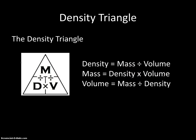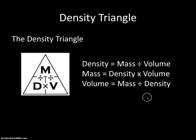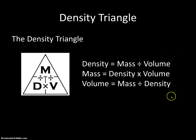We're going to start by showing you a tool that you can use to calculate mass, the volume, and the density, and it's called the density triangle. You can see by looking at these equations on the right-hand side that as long as we know two of these properties of matter, we can calculate the third. We have a way to find an equation to figure out the third value.